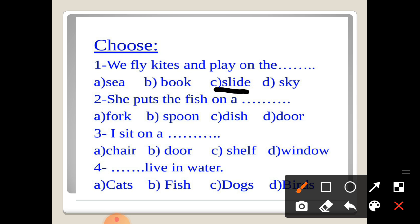Okay. Number two: she puts the fish on a: fork, spoon, dish, door. Who will say it with me? She puts the fish on a, excellent, on a dish. Number three: I sit on, I sit on a: chair, door, shelf, window. Who's smart? Yes, I heard someone smart saying chair. Very good.